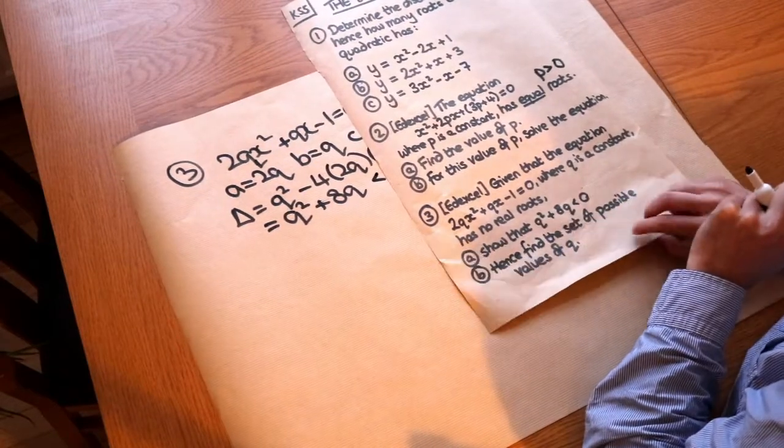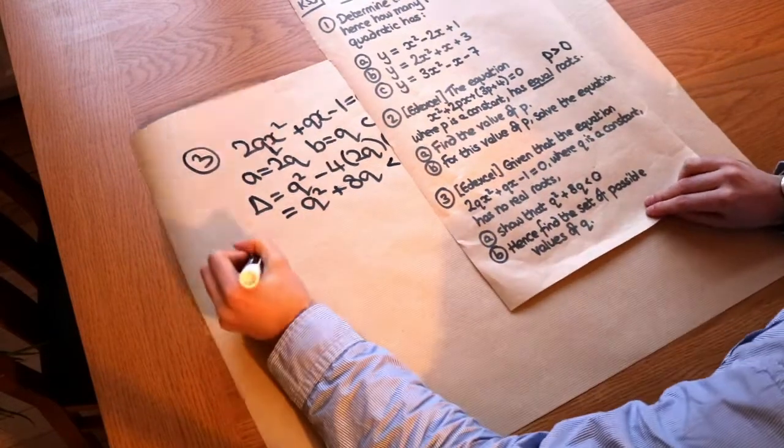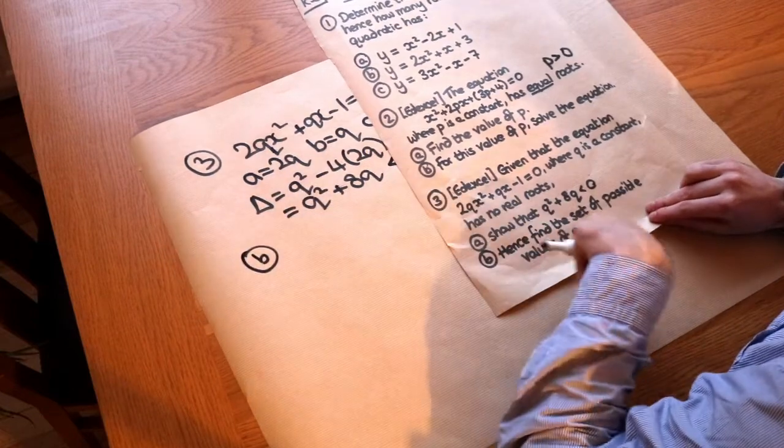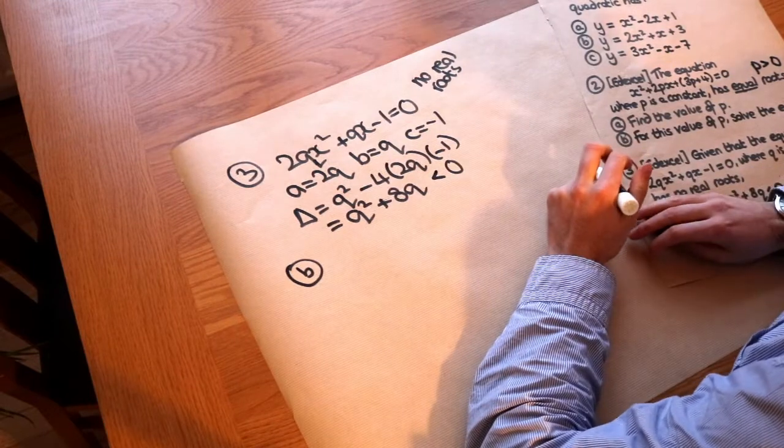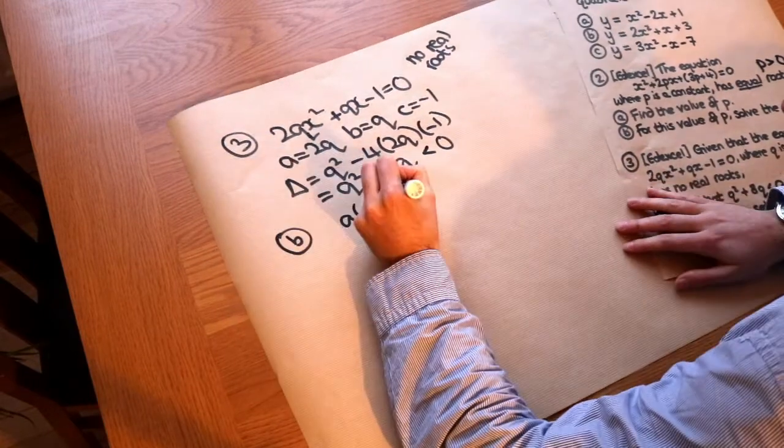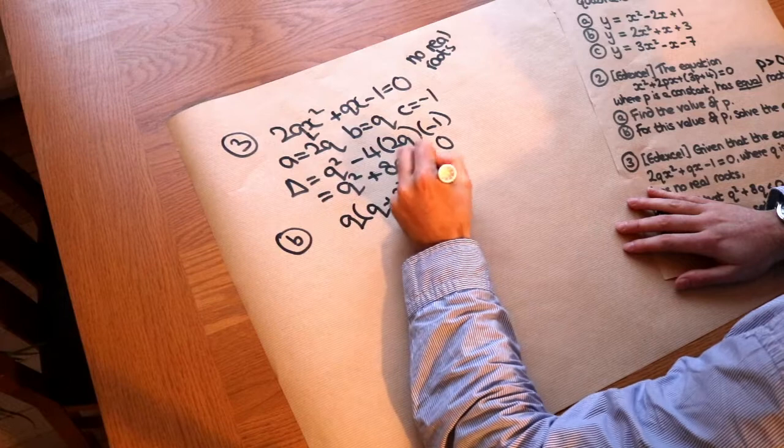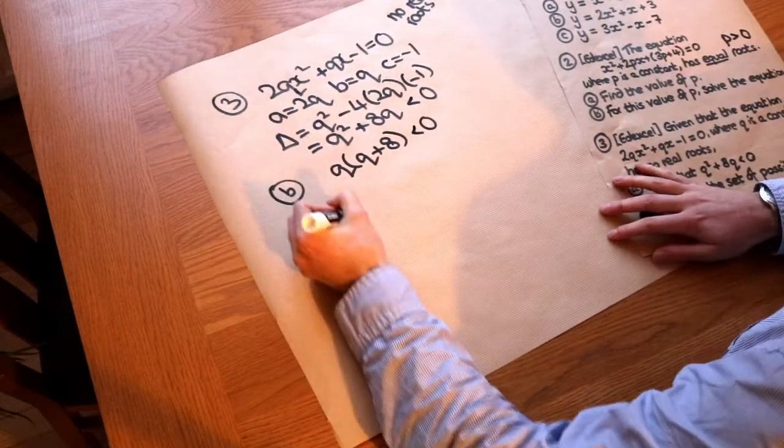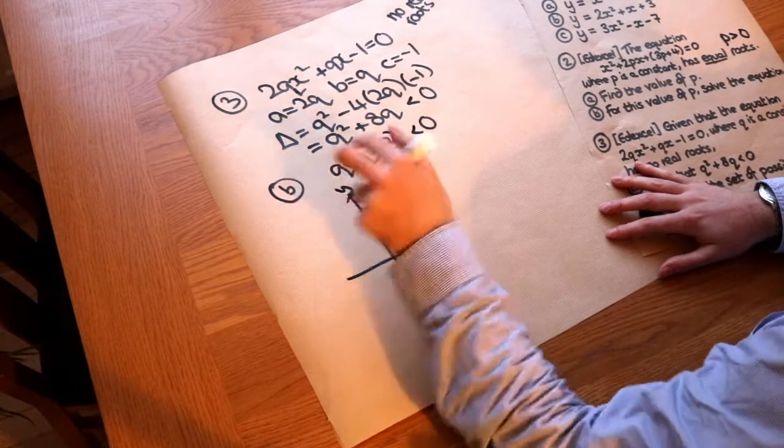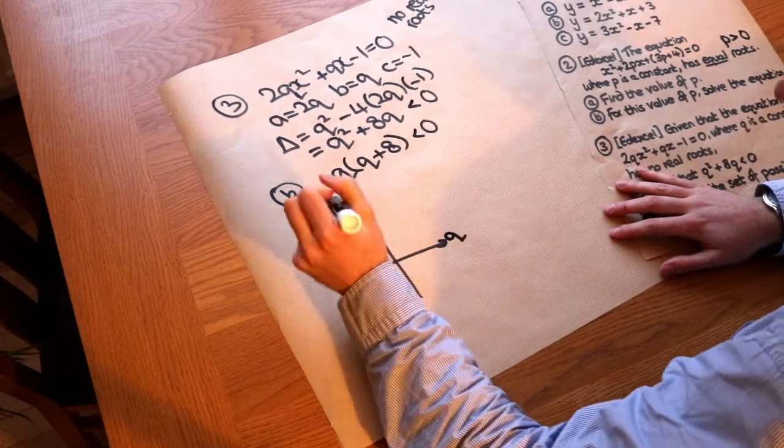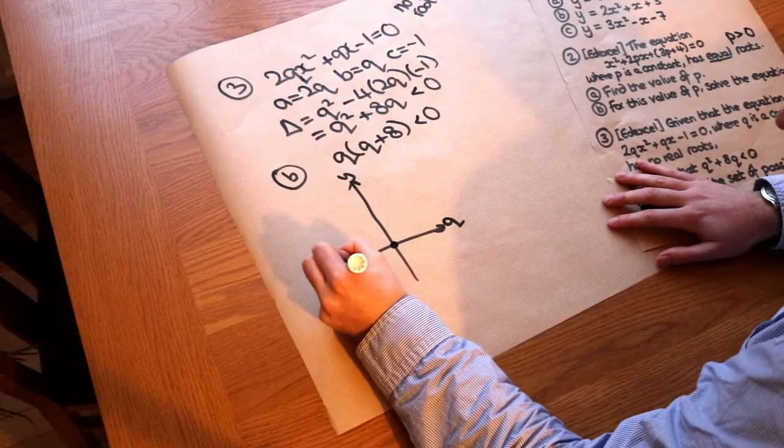And then part b is to hence find a set of possible values of q. So we just need to solve this quadratic inequality. Now we explored how to do this in another video. We just factorize it. And then, do you remember, we just sketch it. So we're going to sketch y against q in this case, because we have q instead of x. So the roots are 0 and -8.